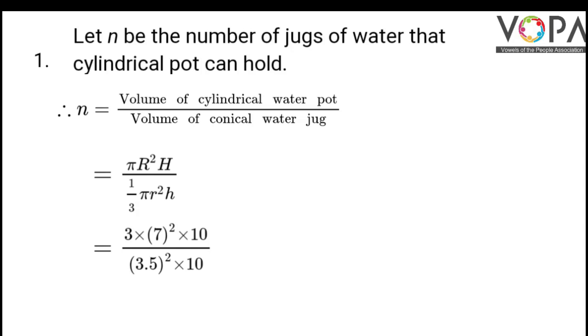We can put the formula. So we have π R² H divided by 1/3 π r² h. Now we can cancel π from the numerator and π from the denominator. 1/3 which is in the denominator, the reciprocal will become 3. So we will write it in the numerator multiplied by 7² × 10 divided by 3.5² × 10.